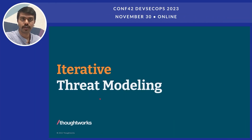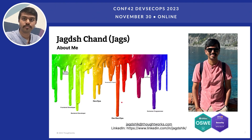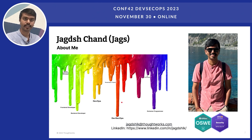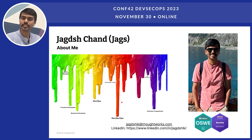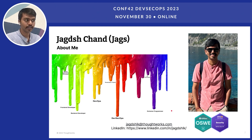Welcome to my talk, Iterative Threat Modeling: Enhancing Security in Agile Development. A little introduction about me — my name is Jagdish Chand, also known as JAX. I'm a full stack developer who plays a DevSecOps role at ThoughtWorks. I always find ways to implement a shift-security-left approach and encourage teams to follow secure development. I'm also an OSWE badge holder from OffSec, along with an AWS security specialist badge. You can follow me on LinkedIn for security-related news and articles.